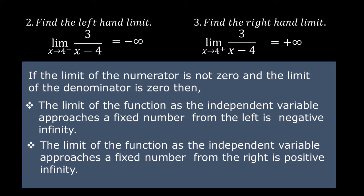As stated at the start of this video, in an infinite discontinuity one or both the left-hand limit and right-hand limit are infinite. Here, the left-hand limit is negative infinity and the right-hand limit is positive infinity — they are both infinite. Therefore, the discontinuity is infinite.